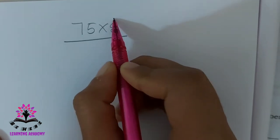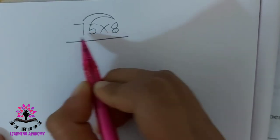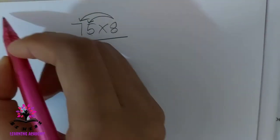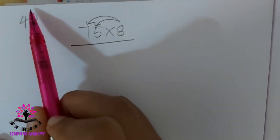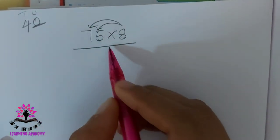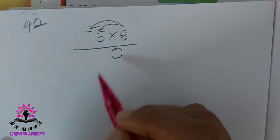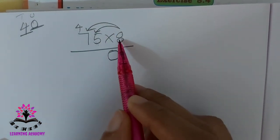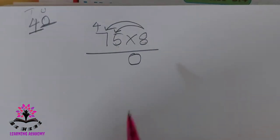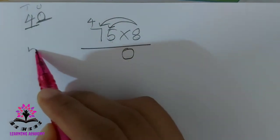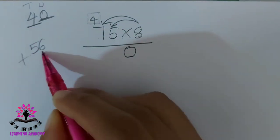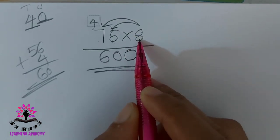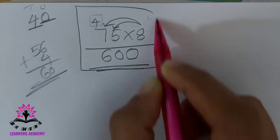Similar to the previous one, we have to solve this problem. 8 you have to multiply first by 5 then by 7. 8 fives are 40. In 40, 0 is in the unit place and 4 is in the tens place. Write 0 in the unit place, just as you do in addition, and carry the 4. 8 sevens are 56, and you add the carried 4 to get 60. Write 60. So 75 multiplied by 8 gives the answer 600. This is multiplication with carrying.